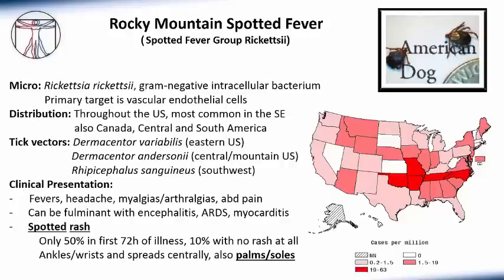RMSF is classically associated with a spotted rash. However, only about half of individuals will develop that rash in the first three days of illness, which may cause a delay in diagnosis. Up to 10% of adults will not present with any rash at all. When the rash does present, it classically begins on the ankles and wrists and spreads centrally, and is very classically associated with the palms and soles — a fact that commonly appears on board exam questions.